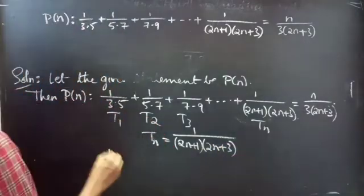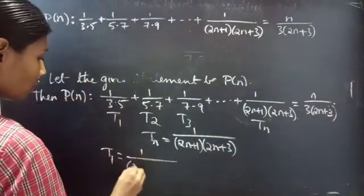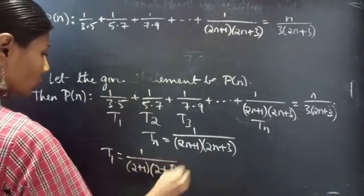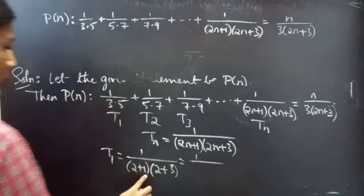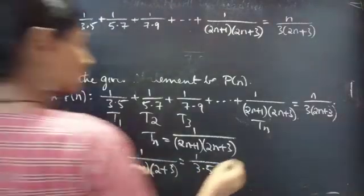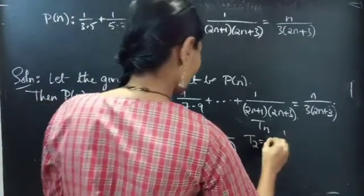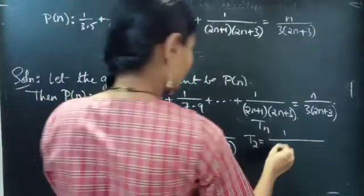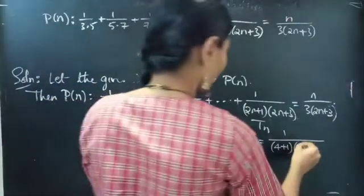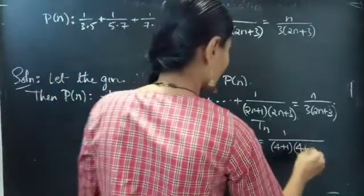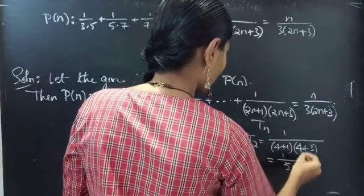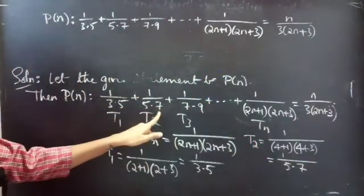If you put n equals to 1, you will get t1 equals 1 by (2×1+1) into (2×1+3), which is 1 by 3 into 5, that is 1 by 15. Likewise, if you put n equals to 2, you will get the second term: 1 by (2×2+1) into (2×2+3) equals 1 by 5 into 7.